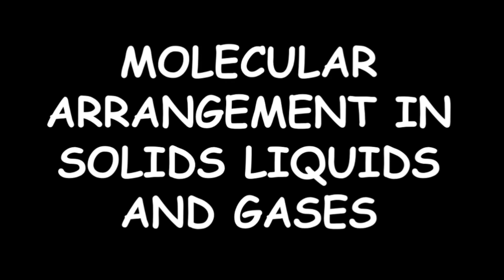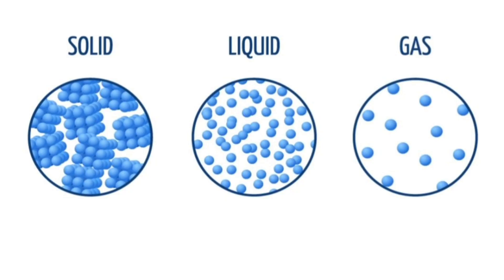Hello children, today we will start with the second part of your chapter matter, and this is about the molecular arrangement in solids, liquids and gases. A substance can exist in different states because of the differences in the arrangement of its molecules.